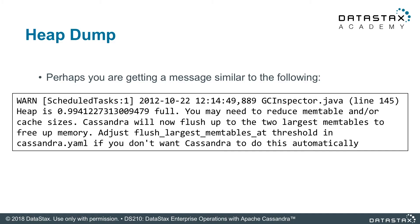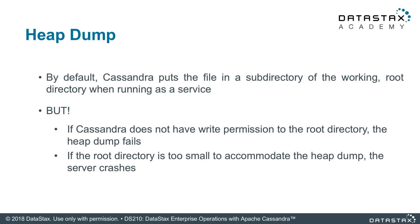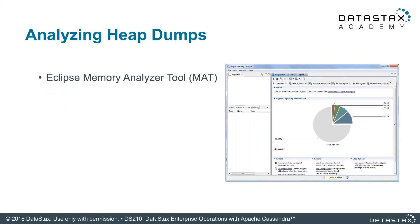Java stores the heap dump in a file, but you need to make sure that the Apache Cassandra process has write access to the directory before the process tries to create a heap dump. You also need to make sure there is enough space in the directory to hold the heap dump. The default location is a subdirectory of the root where the process runs.